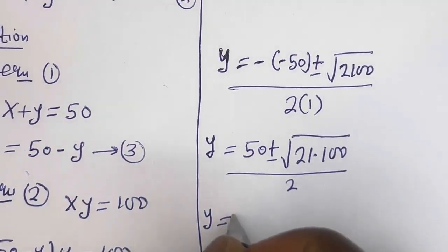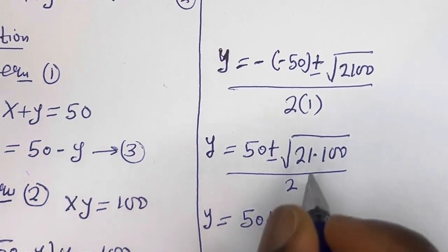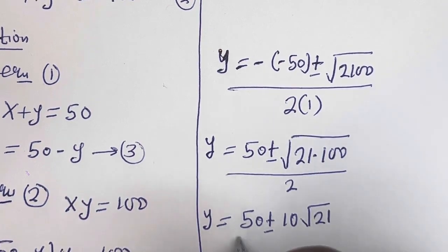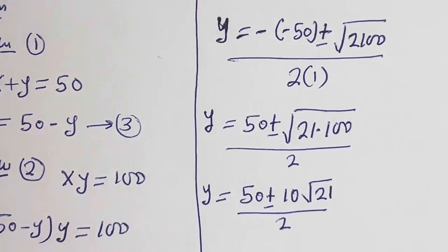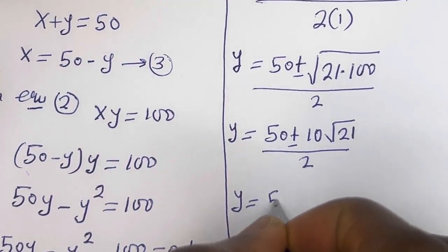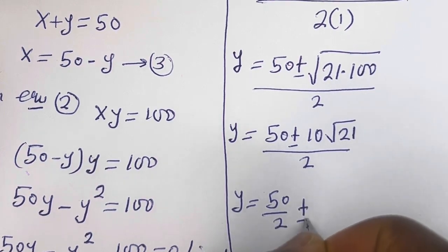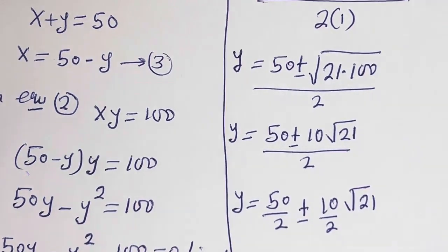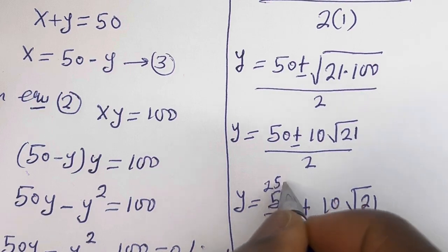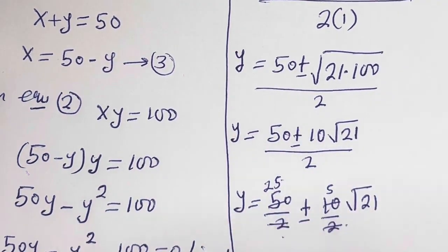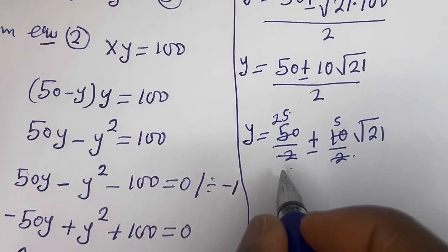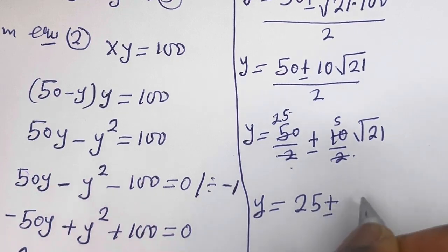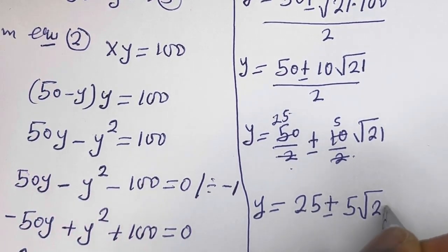So y is equal to 50 plus or minus square root of 100, that is 10, times square root of 21, over 2. This gives y is equal to 50 over 2 plus or minus 10 over 2 times square root of 21, which simplifies to y is equal to 25 plus or minus 5 square root of 21.